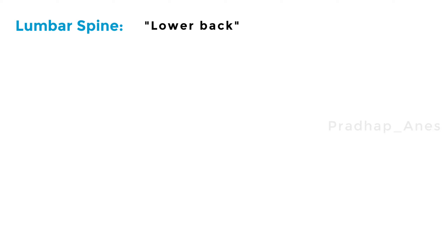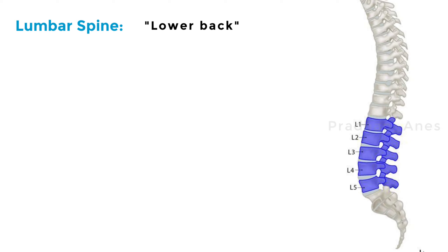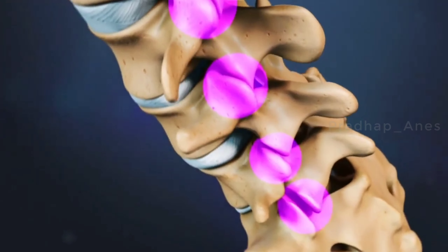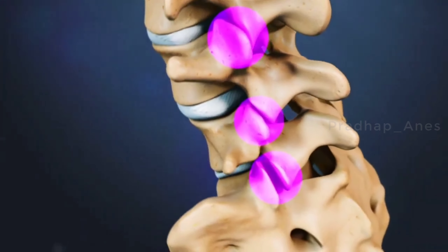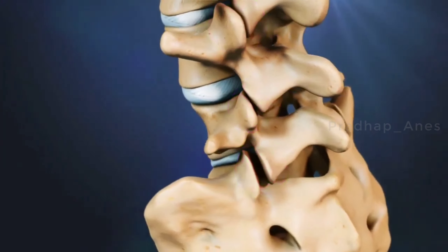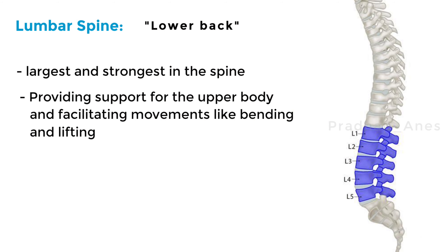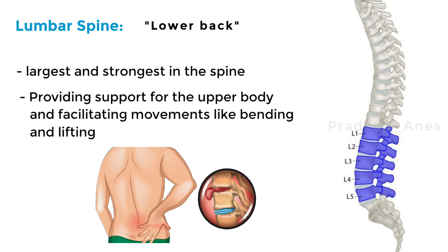The lumbar spine, or lower back, is located in the lower back and consists of five vertebrae. These vertebrae are the largest and strongest in the spine, providing support for the upper body and facilitating movements like bending and lifting. The lumbar spine bears a significant amount of weight and can be prone to stress and injury.